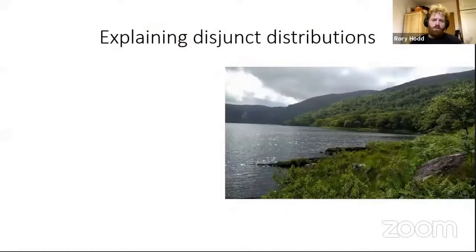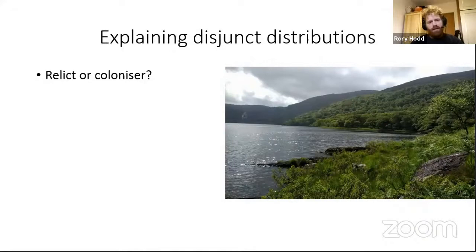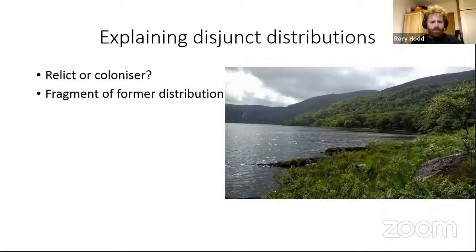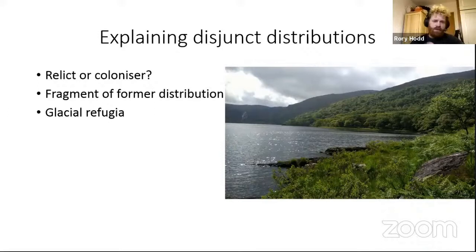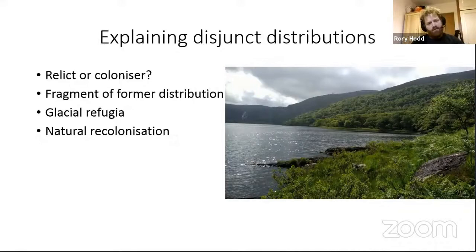So why do these disjunct distributions come about? The crux of it is either these species are relicts of a wider distribution, or they've colonized by some kind of dispersal. They could have occurred much more widely and the distribution we see now is just a fragment of what was previously a much larger distribution. There's also the idea of glacial refugia — during the last ice age there could have been some ice-free land where these species hung on while the ice wiped out species everywhere in between. And then there's the idea of natural recolonization since the last ice age.